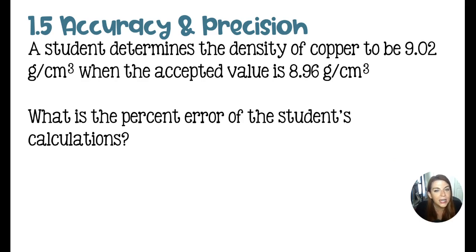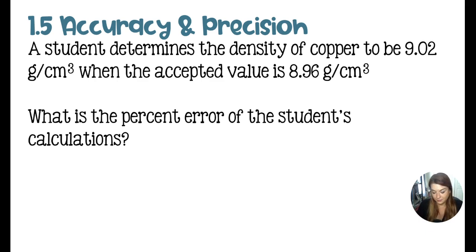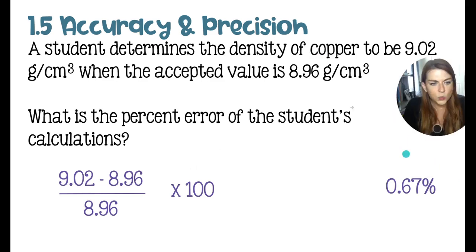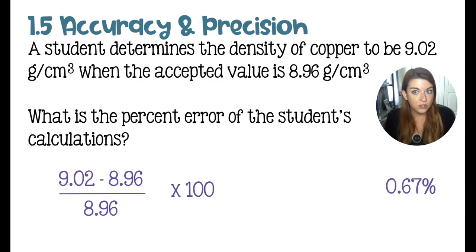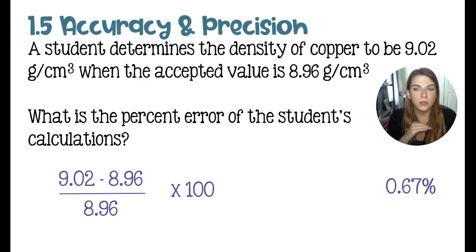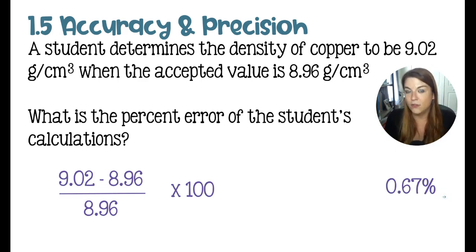Next is accuracy and precision. A student determines the density of copper to be 9.02 g/cm³ when the accepted value is 8.96 g/cm³. What is the percent error? We plug that into the percent error equation: (9.02 − 8.96) / 8.96 × 100. This student is very accurate because they are under 5% — which is how we determine whether experimental results are valid. They are less than 1% off, which is fantastic.